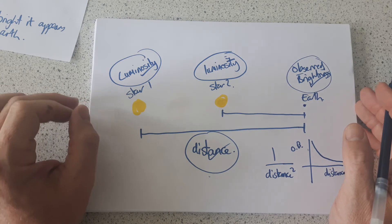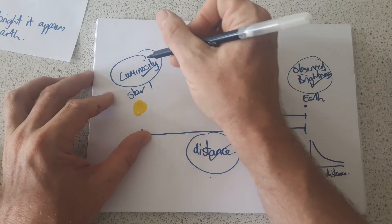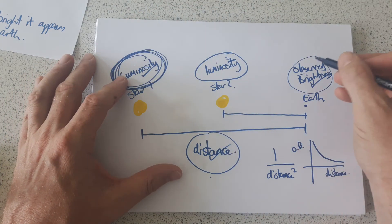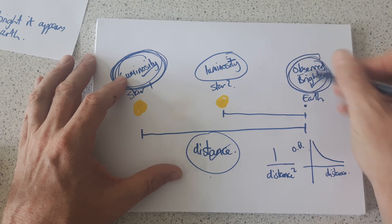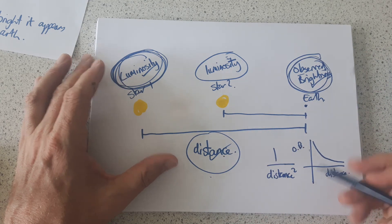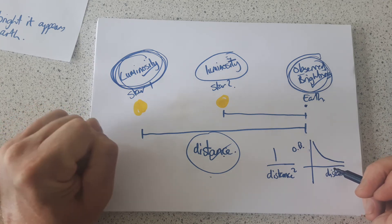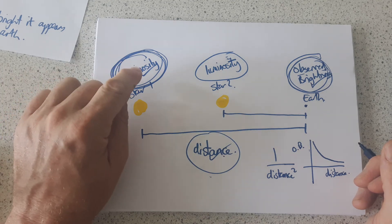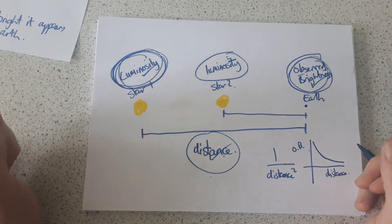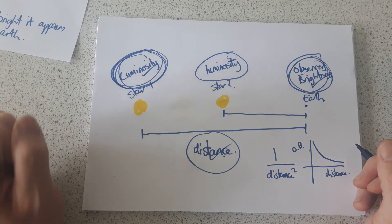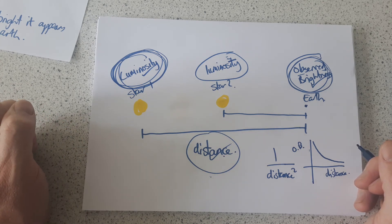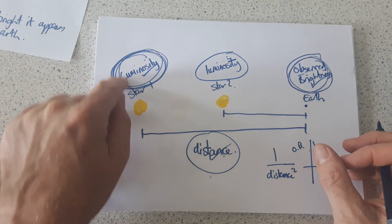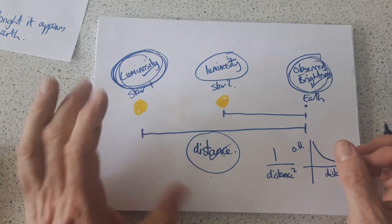So the Cepheid variable method is really a way of trying to find out the true luminosity of a star. If we know the true luminosity and then measure its observed brightness, we can use this relationship to find its distance. The Cepheid variable method all depends upon knowing the luminosity of a star, but the luminosity is really hard to find because you can't just go and visit the star. So the method itself is about how someone came up with a way of measuring the luminosity of the star — and that's going to be in the next video.